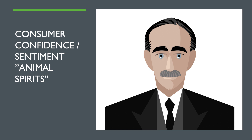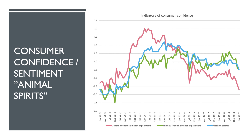We can't mention consumer spending without thinking about confidence — animal spirits. This image of Keynes, John Maynard Keynes, the founding father of modern macroeconomics, who talked about the volatile, unpredictable level of animal spirits — the state of optimism or pessimism. Confidence drives decisions and behaviour, and confidence is built on expectations.